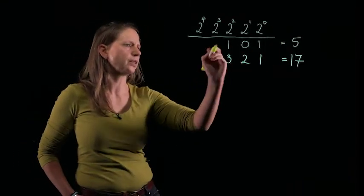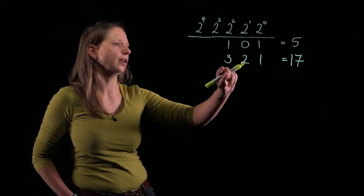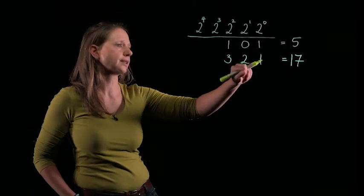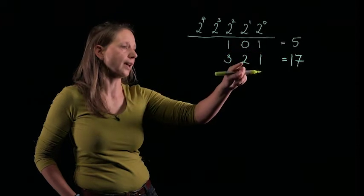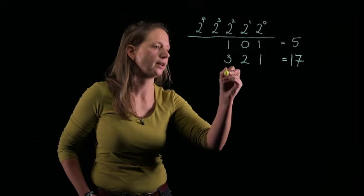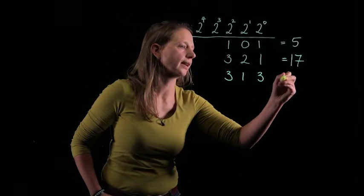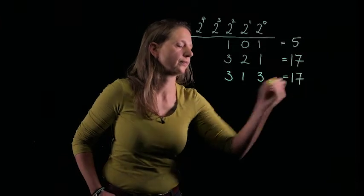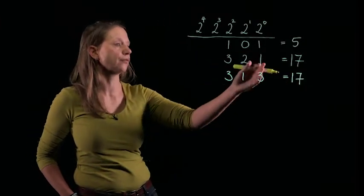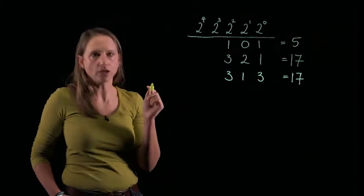And whilst binary is unique, so that's the only way that I can write 5, this is no longer unique because I can write one of these 2s here, I could replace with two 1s. I could write 3, 1, 3, and I get the same number.